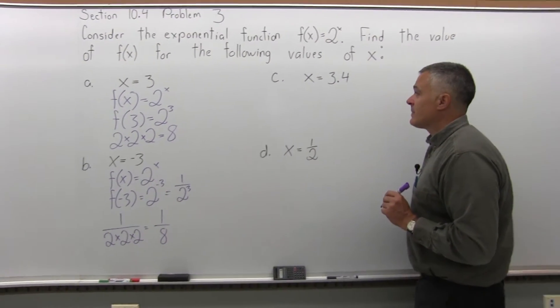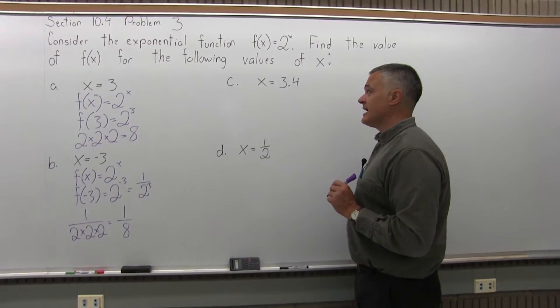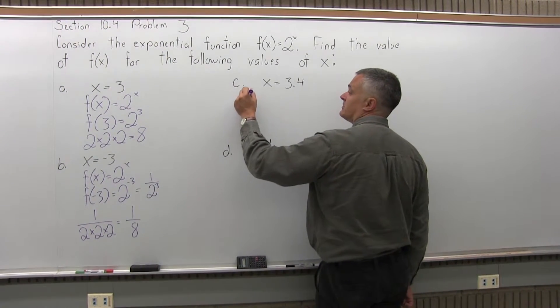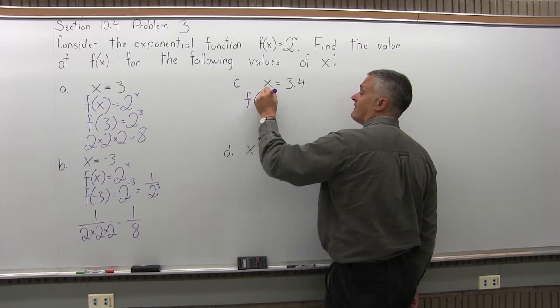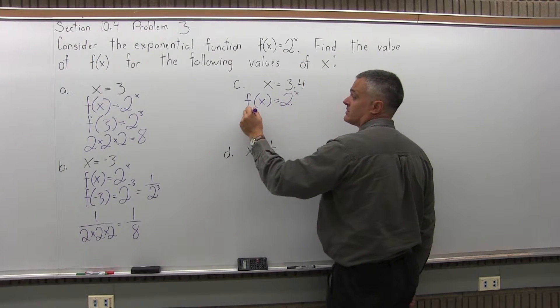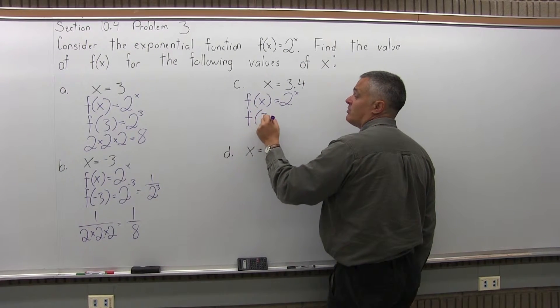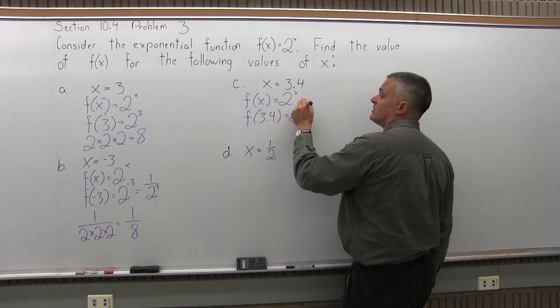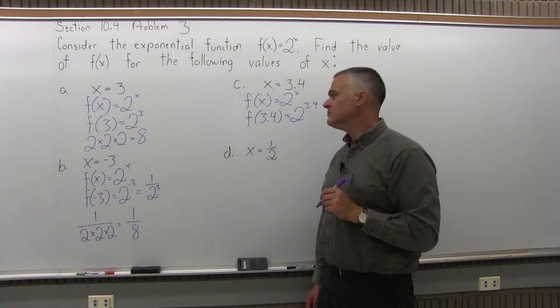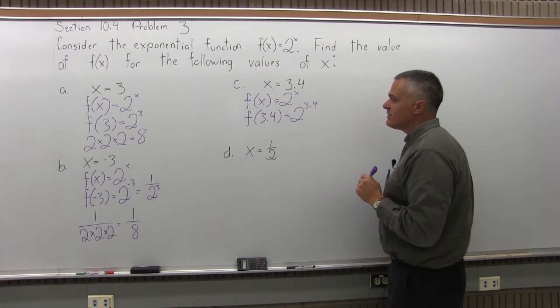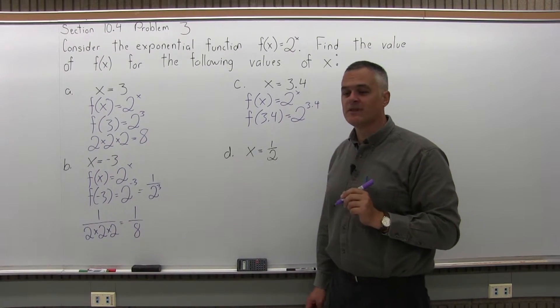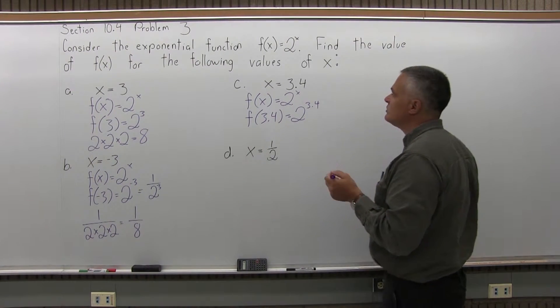And then c, x is 3.4. Well, as we've done with the others, start with f of x equals 2 to the x. And now they're telling you use a value of 3.4 for x. So f of 3.4 equals 2 to the 3.4 power. So can you even do that? Well, you can, but you need a calculator. So 2 to the 3.4 is 2 times itself 3.4 times, kind of tough to think of. So what you need to do is use your calculator.